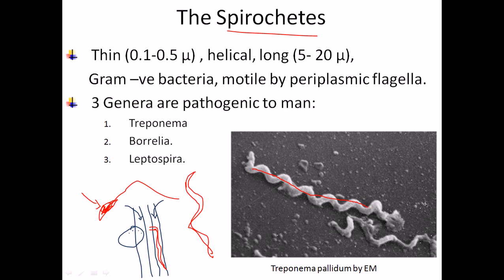Because the flagella is held within the periplasmic space, when it starts to move, the spirochete wraps around itself and moves in a screw-like motion — similar to how a screw, when tightened, moves in a direction. That is how spirochetes move from one place to another.